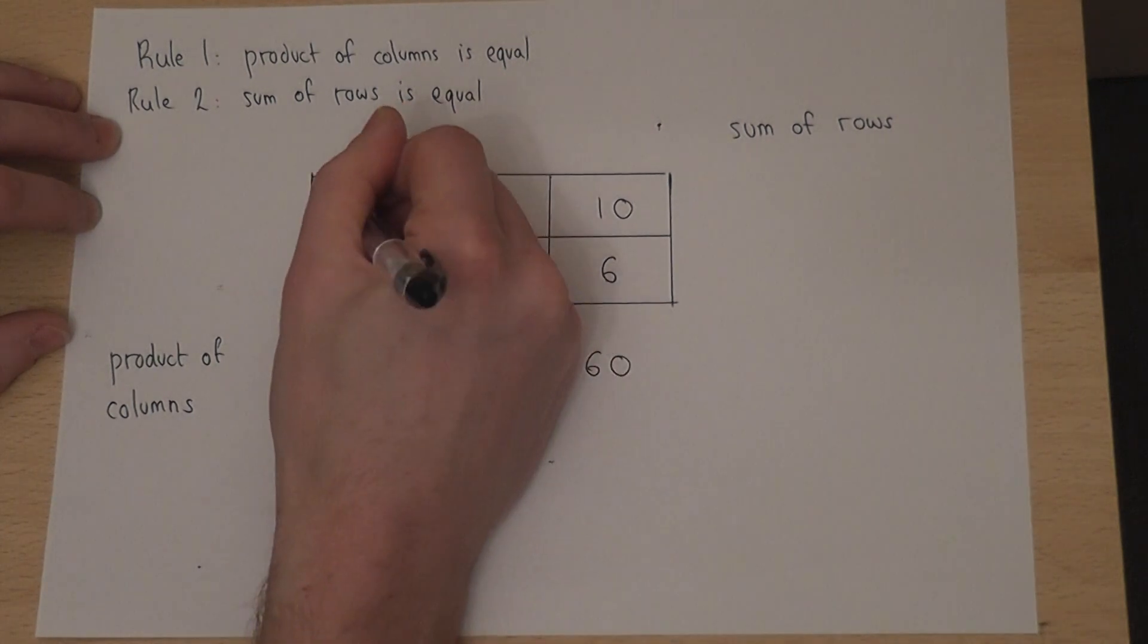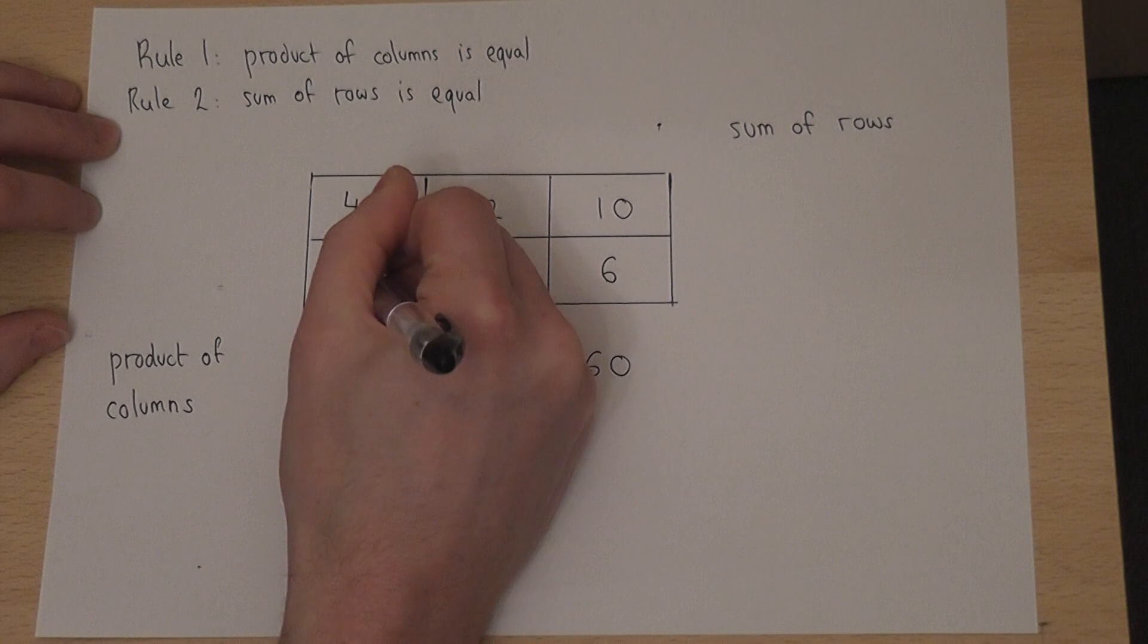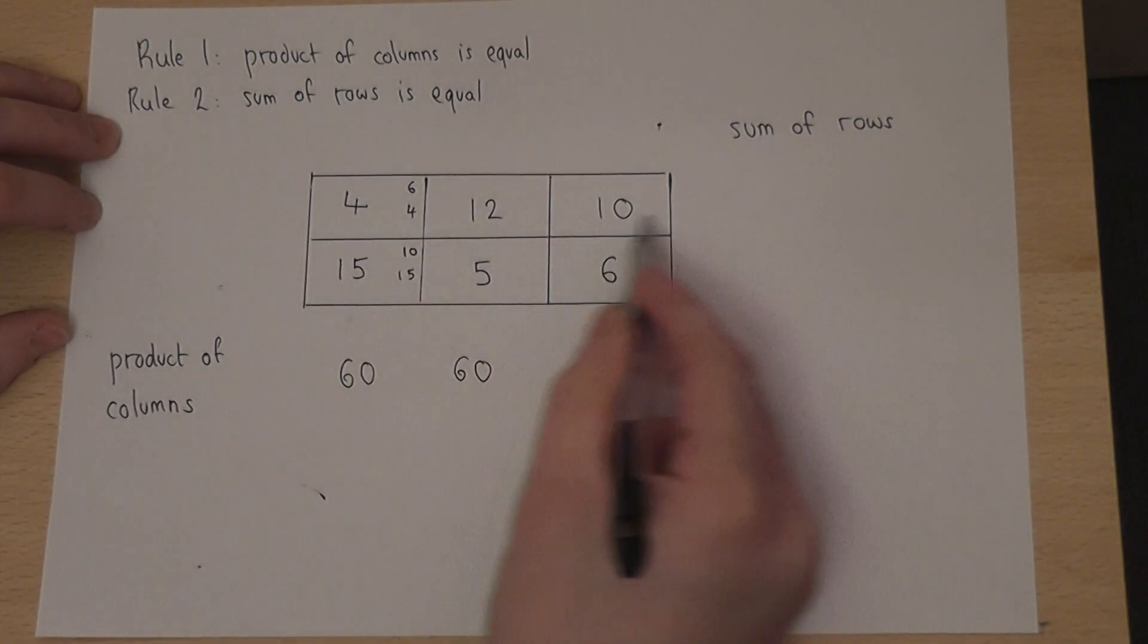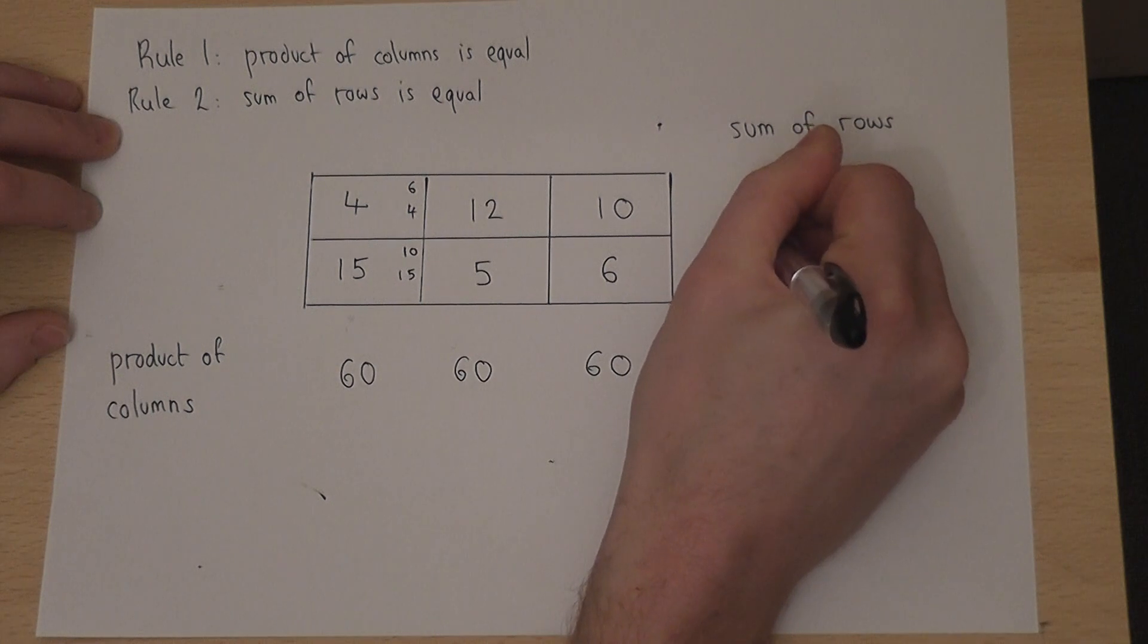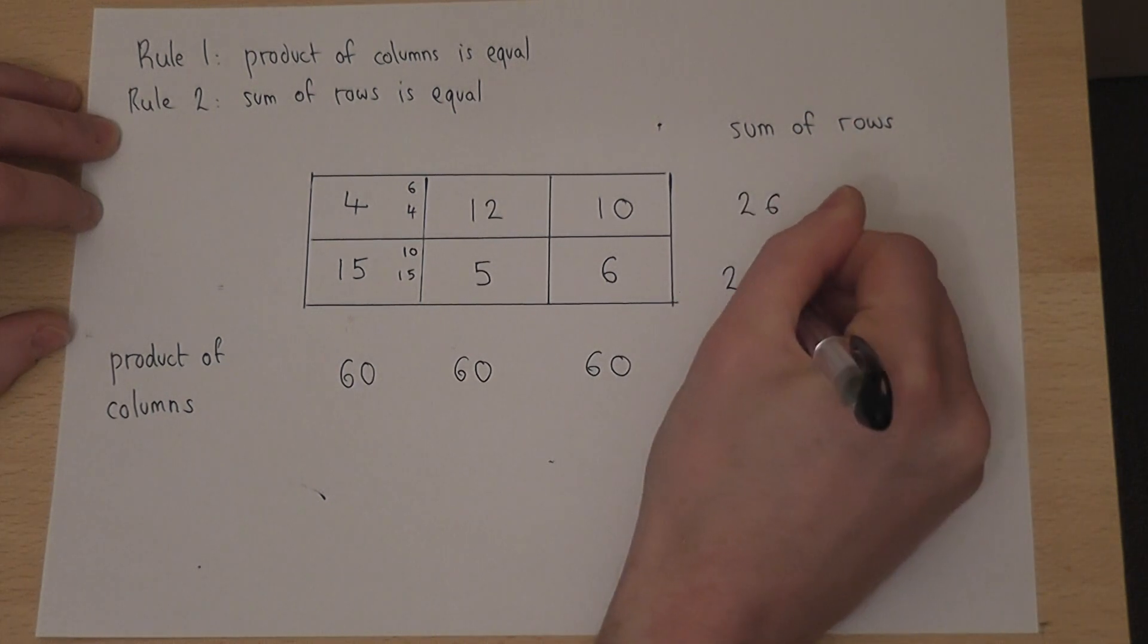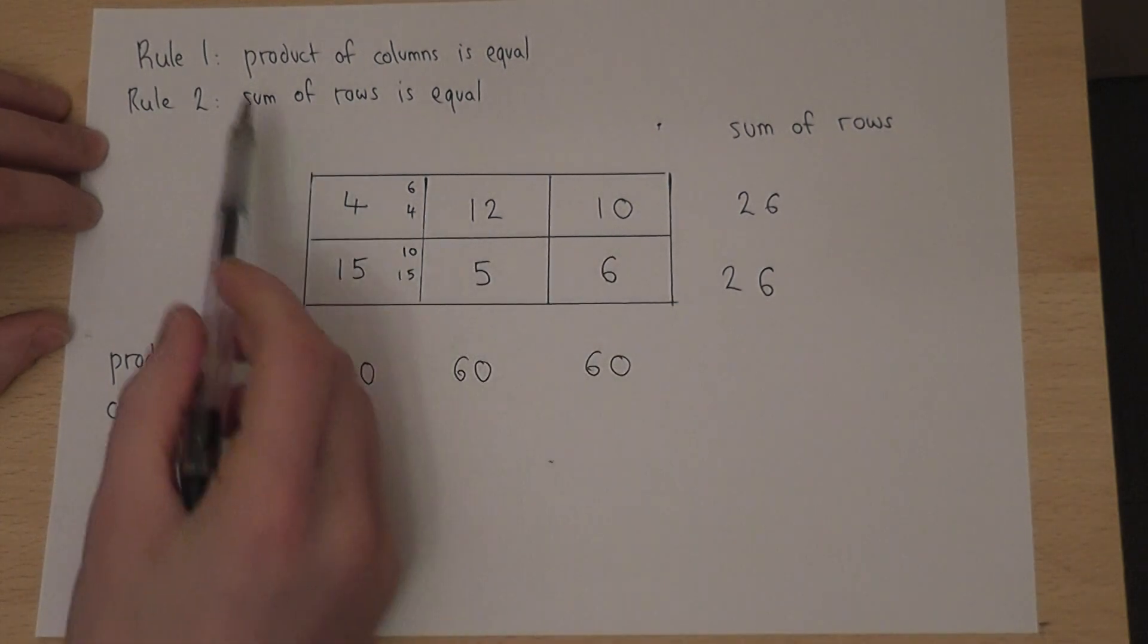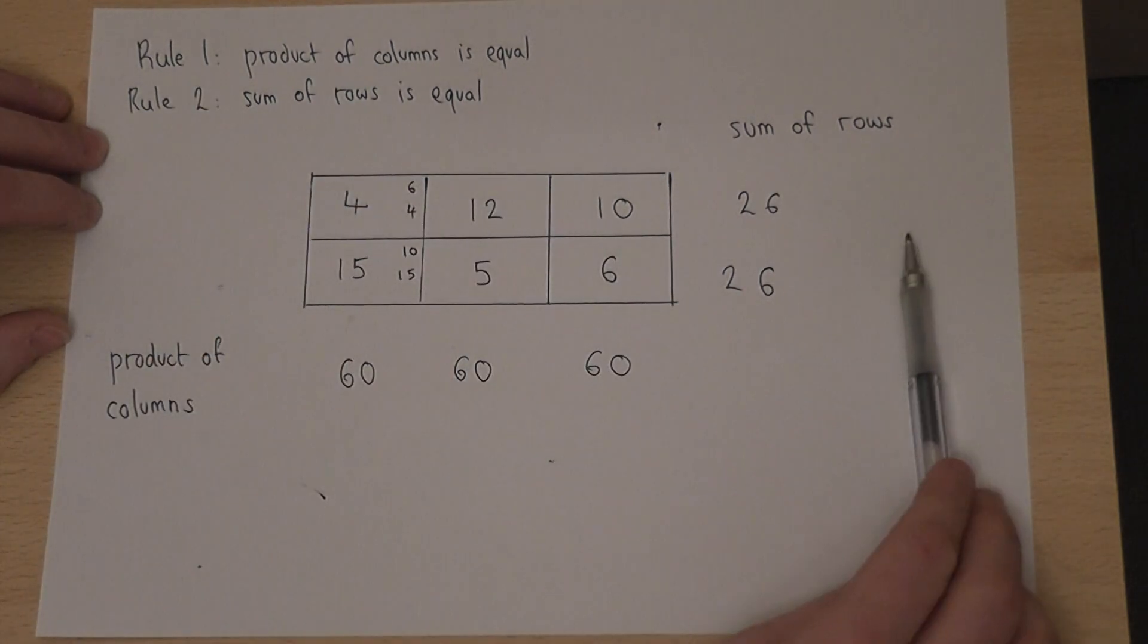So if I put the numbers 4 and 15 in here, then they times to make 60, and the sum of the rows is 26 in both cases. So I've therefore made the table up to satisfy the two given rules.